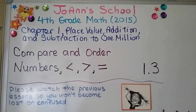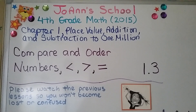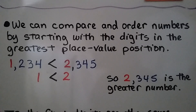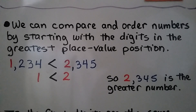Lesson 1.3: Compare and order numbers — less than, greater than, equal to. We can compare and order numbers by starting with the digits in the greatest place value position.